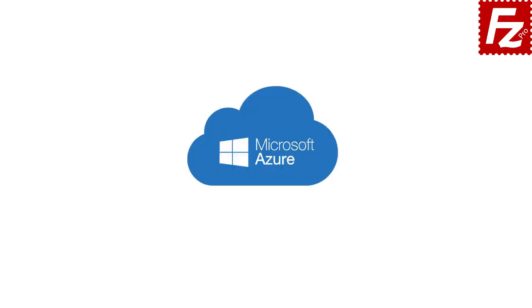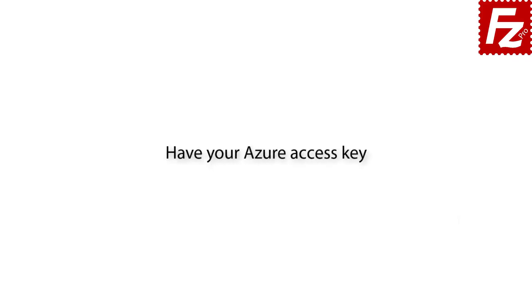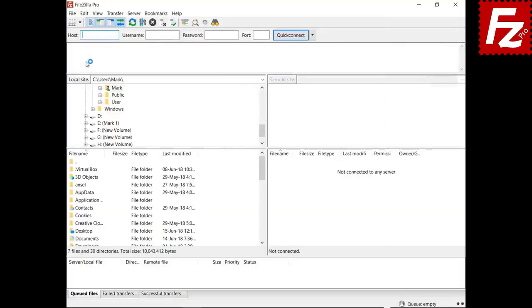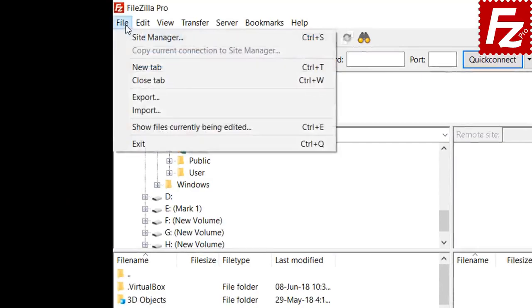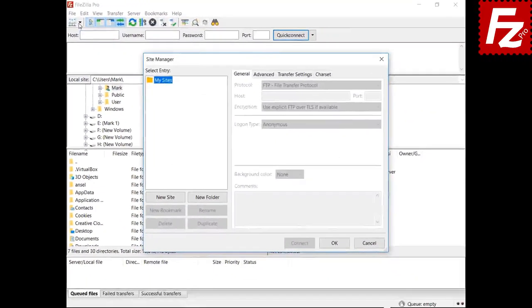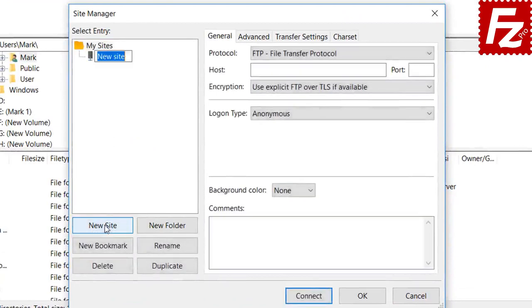In this tutorial you will learn how to configure FileZilla Pro to connect to Microsoft Azure Cloud Storage Services. FileZilla Pro supports both file and blob Azure storage types. Before starting, make sure you have an access key from the Microsoft Azure dashboard portal website. First, create a site entry for your Azure connection and click New in the Site Manager dialog box.